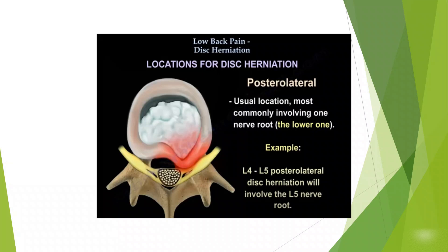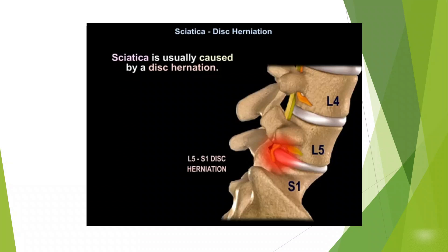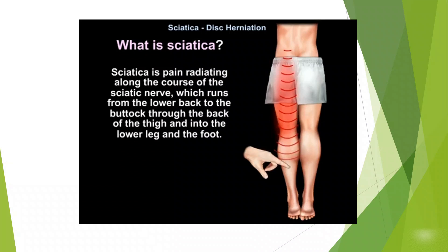What is the typical location for disc herniation? It is the posterolateral aspect of the spine — this is the most typical location. It usually involves the lower nerve root. For example, if you have an L4-L5 posterolateral disc herniation, the patient will have symptoms of the L5 nerve root, as seen in this diagram. The patient will also have sciatica, which is a shooting pain radiating along the course of the sciatic nerve, running from the lower back to the buttock, through the back of the thigh, and into the lower leg and foot.